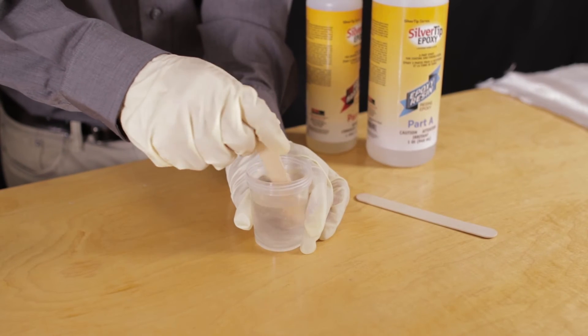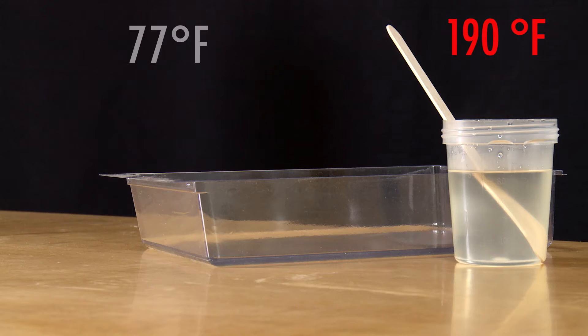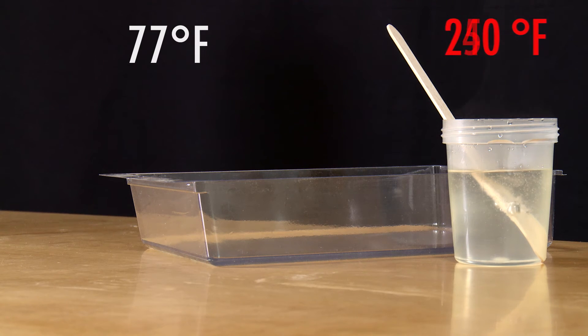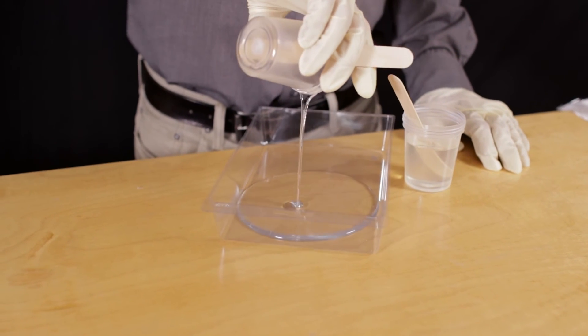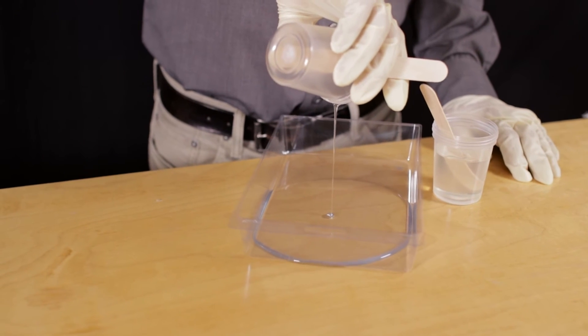The reason why epoxy gets so hot when it's stored in a cup is the heat generated has nowhere to go. To prevent this, you need to increase the surface area of the epoxy. Pour your epoxy out into a tray—this will give it more surface area, allowing it to release its heat, and it'll give you longer working time.